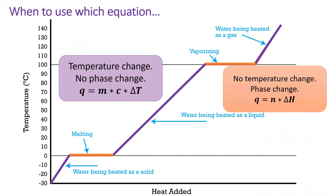If you can keep the image of the heating curve in mind, you can know which equation to use for each step of the process. The purple lines represent temperature change without phase change. For those, we use q equals mc delta t. The orange lines represent phase changes without temperature changes. We use n delta h for these sections.